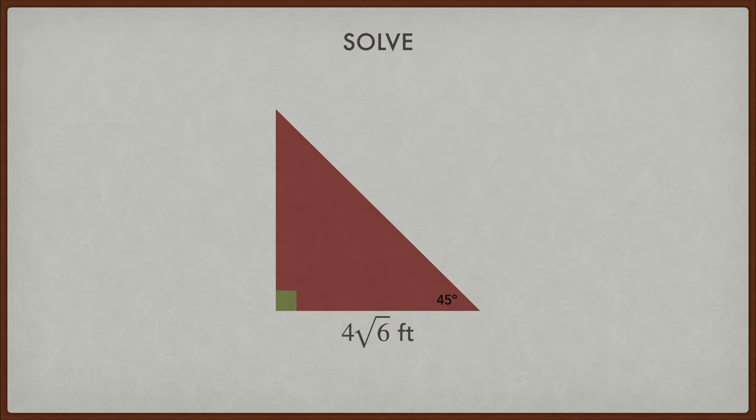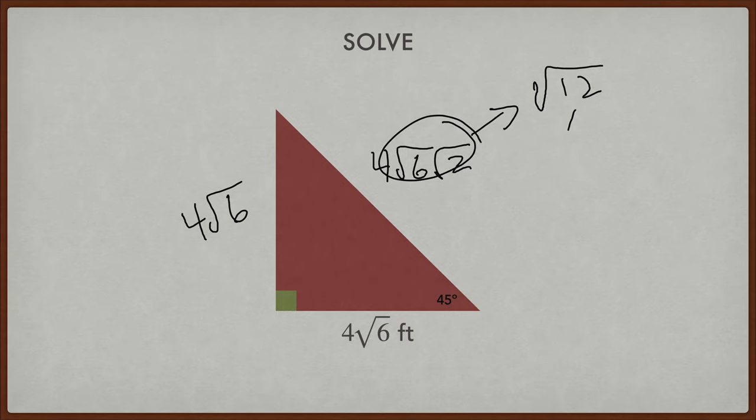4 square roots of 6. So this is also 4 square roots of 6, and this becomes 4 square roots of 6 times the square root of 2. So this part right here becomes the square root of 12. 12 is 2 times 6, which is 2 times 3. We have a pair of 2s, which means this is now 4 times 2 square roots of 3, or 8 square roots of 3.